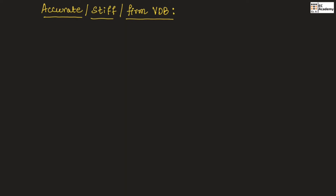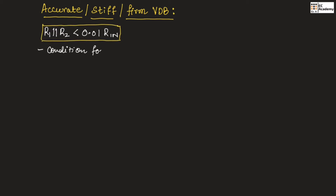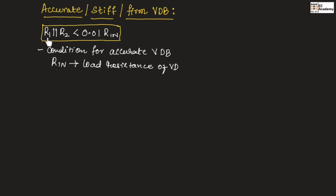While analyzing voltage divider biasing, the condition for accurate voltage divider biasing is that R1 parallel with R2 should be less than 0.01 RIN. Here RIN is the load resistance of the voltage divider, and we need to consider this condition while calculating the Thevenin's equivalent resistance.